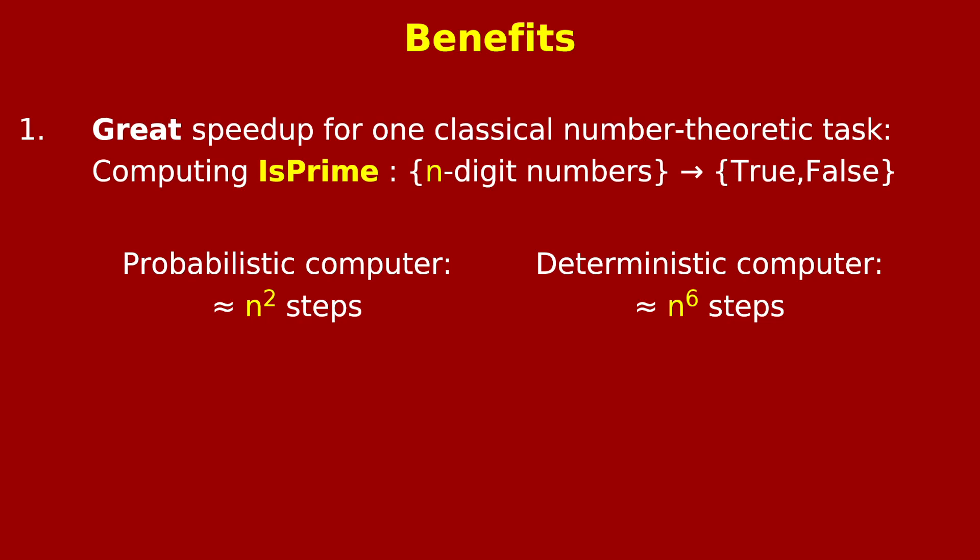You can compare this with the fastest known primality testing algorithm that uses no randomness. This takes roughly n to the power of 6 steps, which would be 10 to the 24 if n is 10,000. And that's completely infeasible. Even 10 to the 24 nanoseconds is over 30 million years.